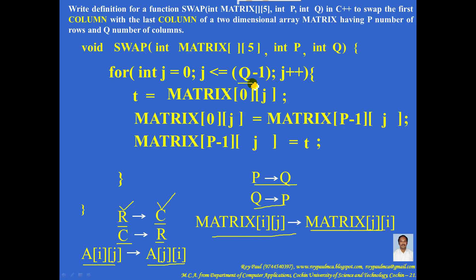So here Q should become P, P should become Q. Similarly P should become Q. Matrix of 0J should become matrix of J0, matrix of Q-1J should become matrix of JQ-1, and here also matrix of JQ-1.